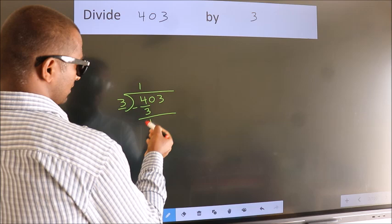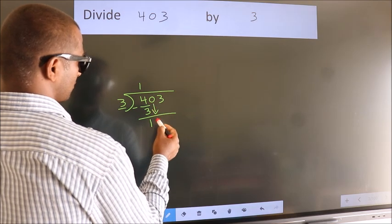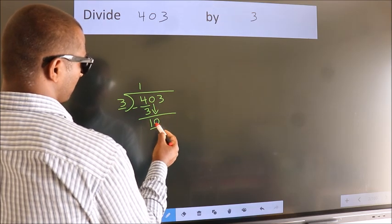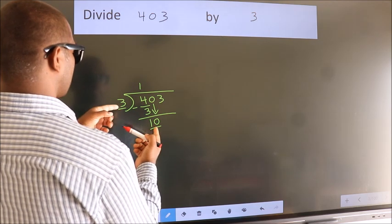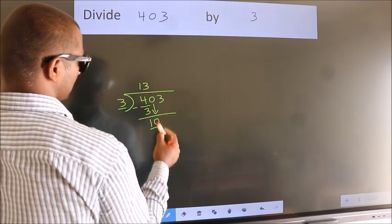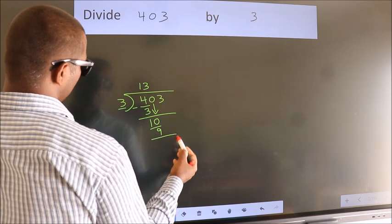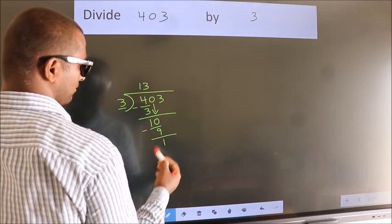After this, bring down the beside number. So, 0 down. So, 10. A number close to 10 in the 3 table is 3 threes, 9. Now we subtract and we get 1.